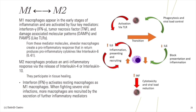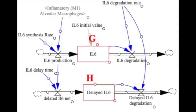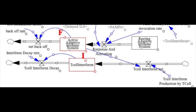M1 macrophages appear in the early stages of inflammation and are activated by four key mediators: interferon gamma (IFN-γ), tumor necrosis factor (TNF), and damage-associated molecular patterns (DAMPs). From these mediator molecules, alveolar macrophages create a pro-inflammatory response that in return produces pro-inflammatory cytokines like interleukin-6 (IL-6). IFN-gamma activates resting macrophages as M1 macrophages. When fighting severe viral infections, more macrophages are recruited by the secretion of further inflammatory mediators. Our model also incorporates macrophages' production of IL-6 — that is, in COVID-19 infected individuals, cytokines like IL-6 increase during disease and decrease during recovery.